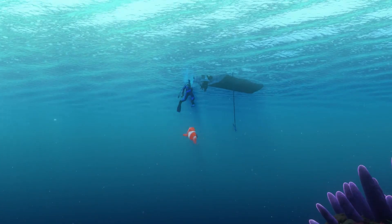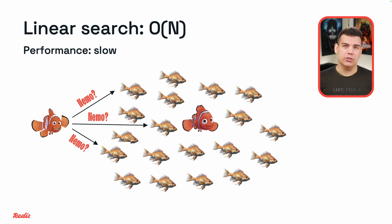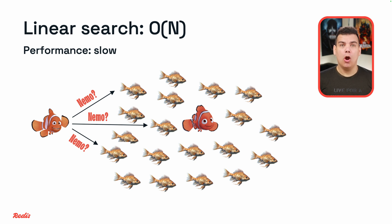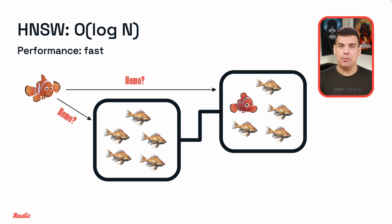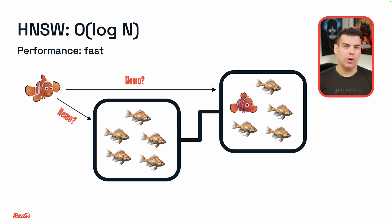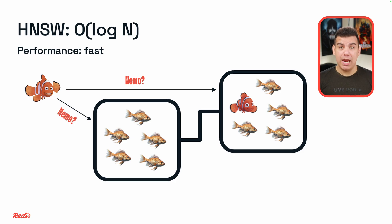When Nemo gets taken to Sydney, Marlin faces an impossible challenge: he needs to find one tiny clownfish in the entire ocean. If he tried to check every single fish one by one it would take him years. We call this linear search, or O(N) complexity in computer science. HNSW transforms this into a logarithmic search, or O(log N), which is way faster. That's exactly what Marlin wanted — a faster way to find Nemo.